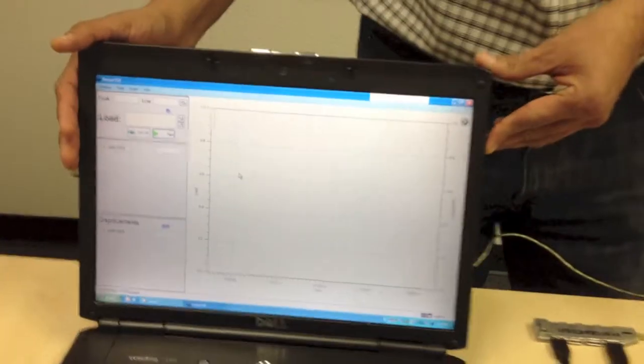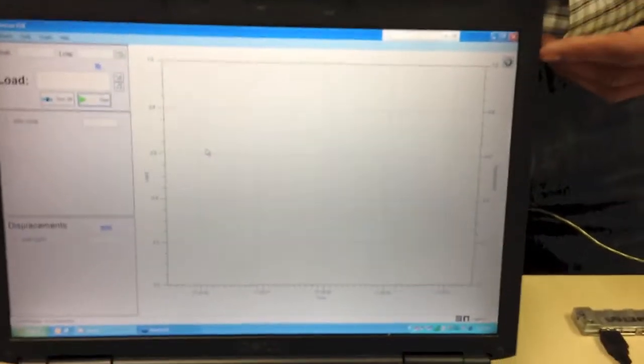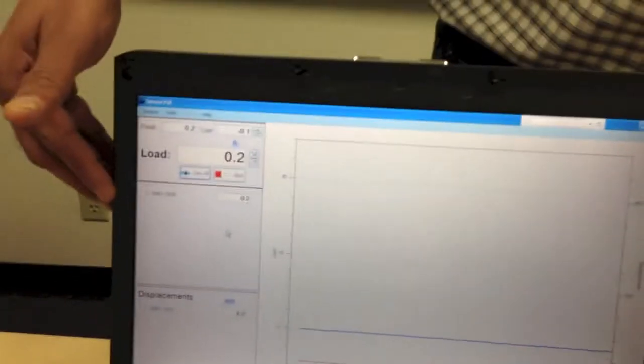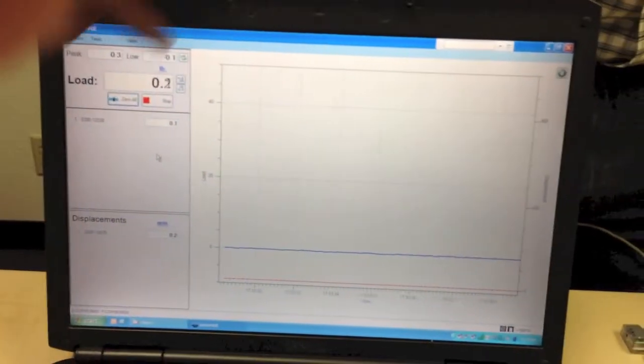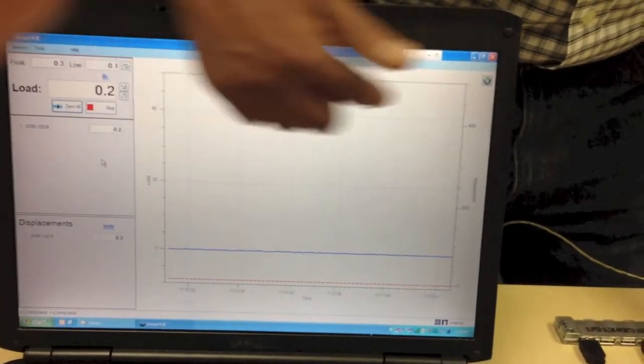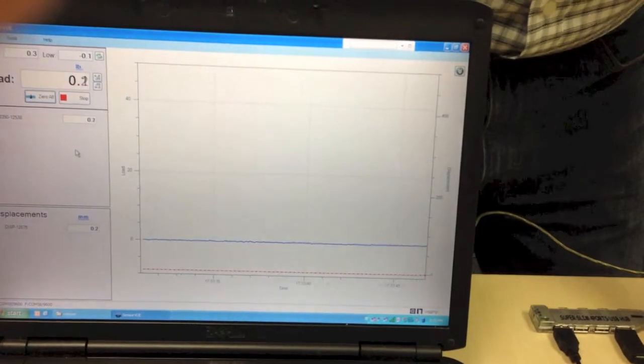Now, on here, you're running our sensor view software that allows you to connect various sensors, whether it's displacement force, torque, or other sensors. At the moment, in this particular instance, we are showing you the load as well as displacement and a chart where on the one Y-axis you have force and the other Y-axis you have displacement. And here is a time on the X-axis.